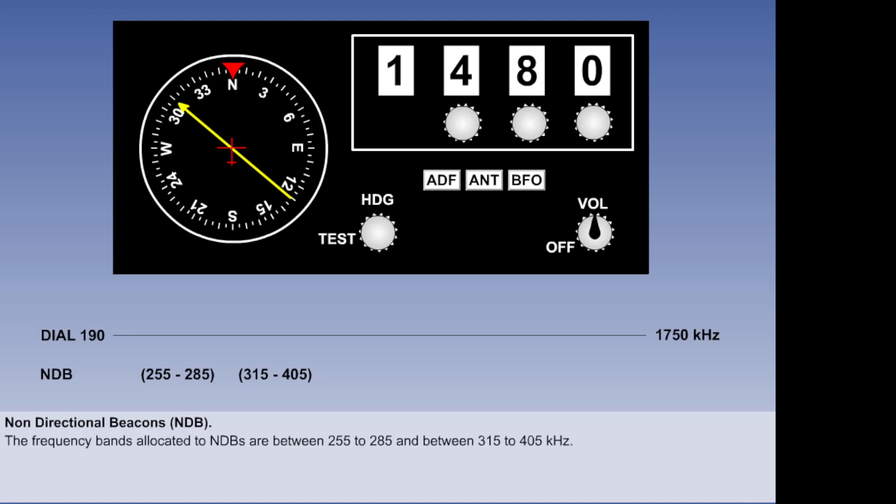Although most ADF receivers have a frequency selector range of 190 to 1750 kHz, the frequency bands which are internationally allocated to NDBs are much more restricted, from 255 to 285 kHz and from 315 to 405 kHz.